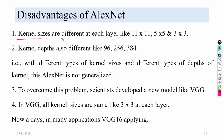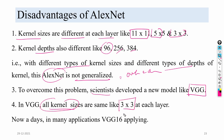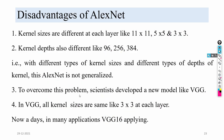The disadvantage of AlexNet is that kernel sizes are different at each layer — 11×11, 5×5, 3×3 — and the depth of kernels also varies: 96, 256, 384. Because of these different kernel sizes and depths, AlexNet is not a generalized model, which can lead to overfitting or underfitting. To overcome this, the VGG model was developed, where all kernel sizes are the same (3×3) at each layer. VGG16 will be explained in upcoming videos.